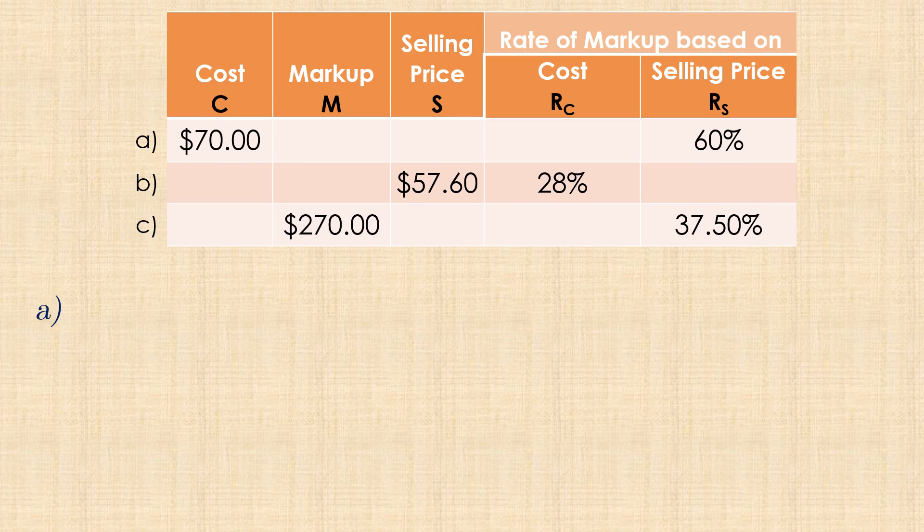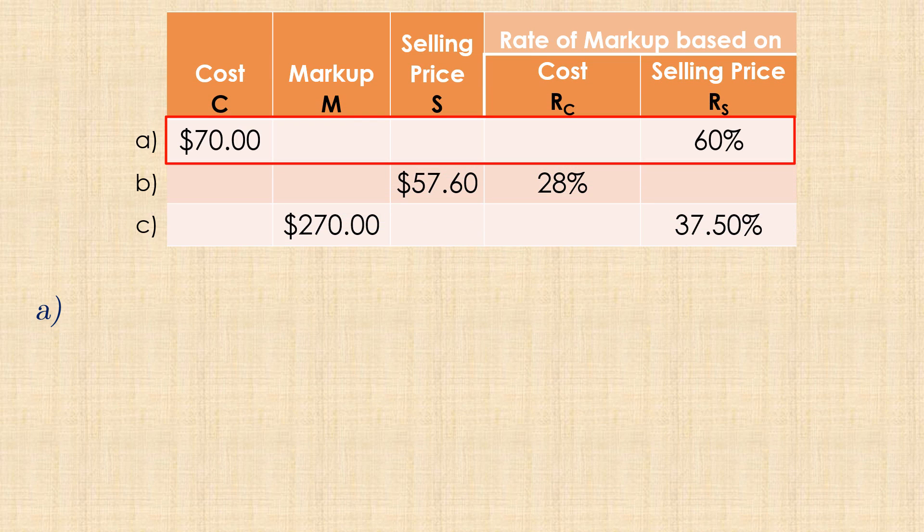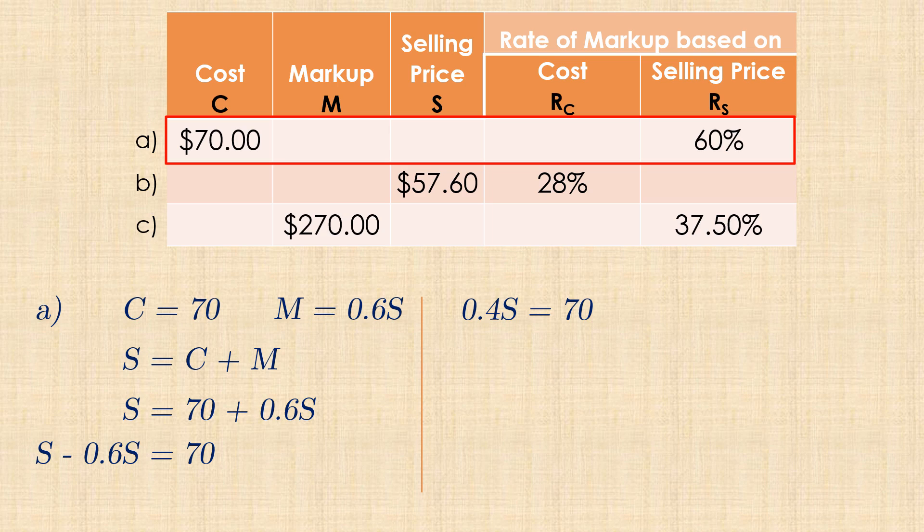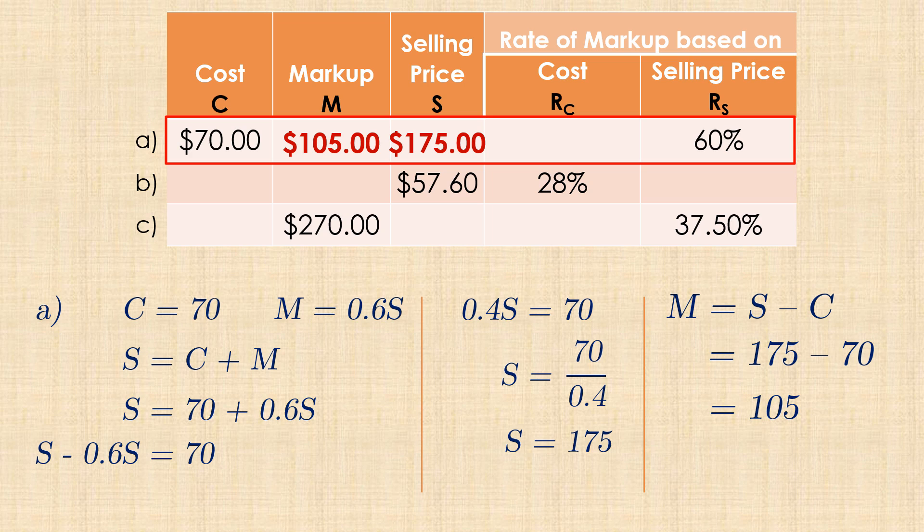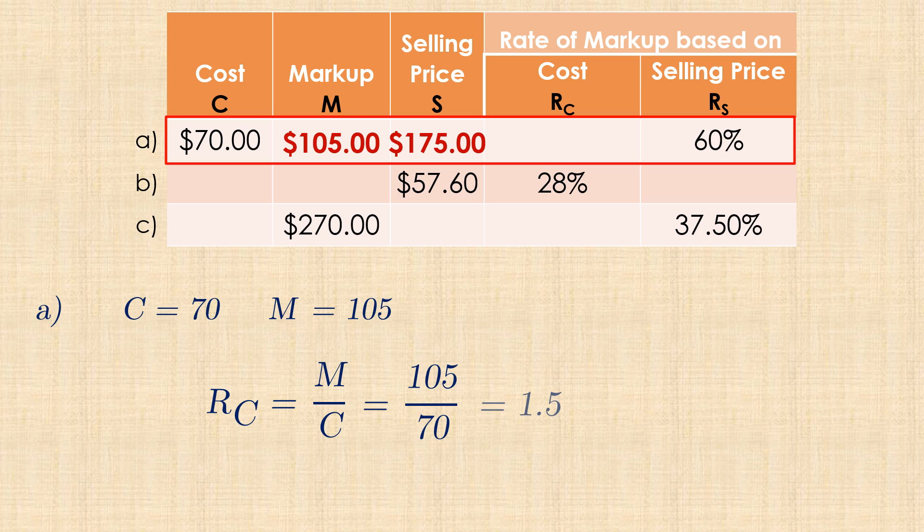Let's now calculate the missing values in this cost markup Selling Price table. In part A, we have a cost of $70, and the rate of markup based on Selling Price is 60%. That is, markup is 0.6 of Selling Price. Beginning with the formula Selling Price equals cost plus markup, we have S equals 70 plus 0.6S. We can then solve for S by first bringing 0.6 to the left of the equal sign, and we have S or 1S minus 0.6S equals 70. That is, 0.4S equals 70. So dividing both sides by 0.4, the Selling Price will be $175. We can then calculate the markup as Selling Price minus Cost, which gives $105. The rate of markup on cost is therefore markup divided by cost, which gives 1.5, and that is 150%, not 1.5%.